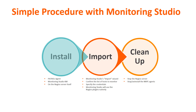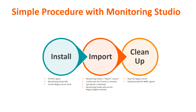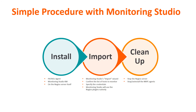First, you need to install the patrol agent and the latest Monitoring Studio package on your Nagios server itself. Then, you import your Nagios configuration using a user-friendly wizard that will translate your Nagios configuration into a TruSight configuration. You just need to specify the credentials required to connect to the monitored systems.